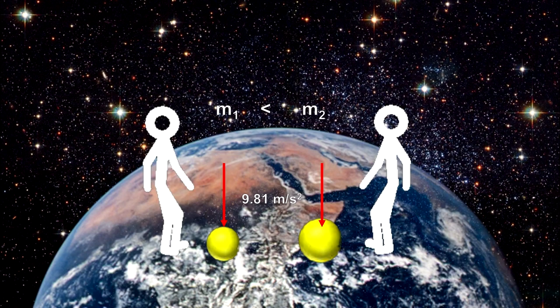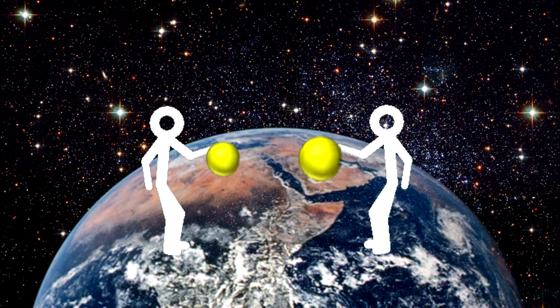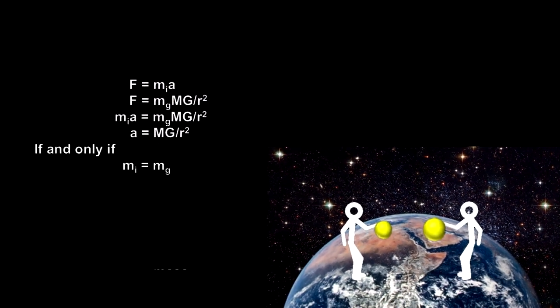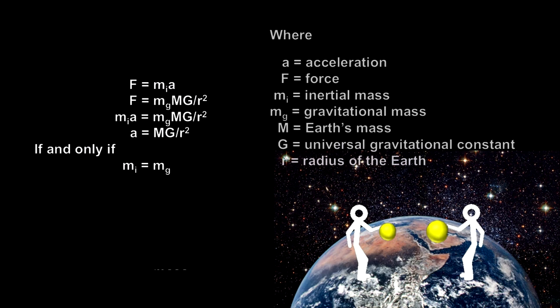That objects with different inertial masses fall at the same speed in a gravitational field can only happen if the inertial mass and the gravitational mass for any object are equal.